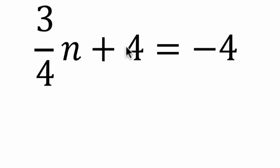So in this problem we know three-fourths of some number plus four is negative four. And I think the main concern here is to get rid of our fraction three-fourths. I would do it in two steps.